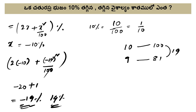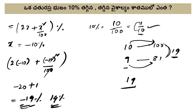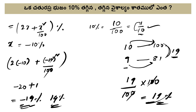Now using the short trick: 10% is 1 by 10, so the original number is 10. 10 squared is 100. For the decrease, 10 minus 1 is 9. 9 squared is 81. The model difference is 100 minus 81 equals 19. So 19 by 100 into 100 gives 19%. The answer is 19%.